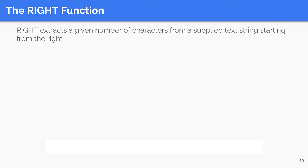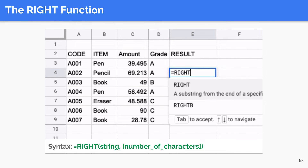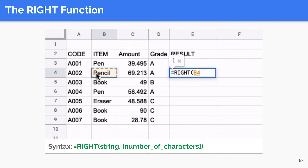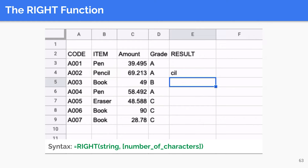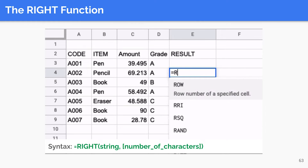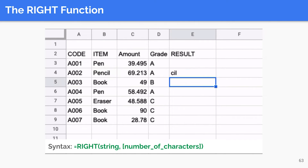The opposite of the LEFT function is the RIGHT function. This allows you to extract a substring from a string starting from the rightmost character. The syntax is similar to that of the LEFT function — the only difference is the function name. Using the same example, we get the last three characters of pencil in cell B4 by calling our function in E4, selecting B4 as our string argument, and specifying 3. When we press Enter, the function returns CIL because those are the last three characters of pencil.